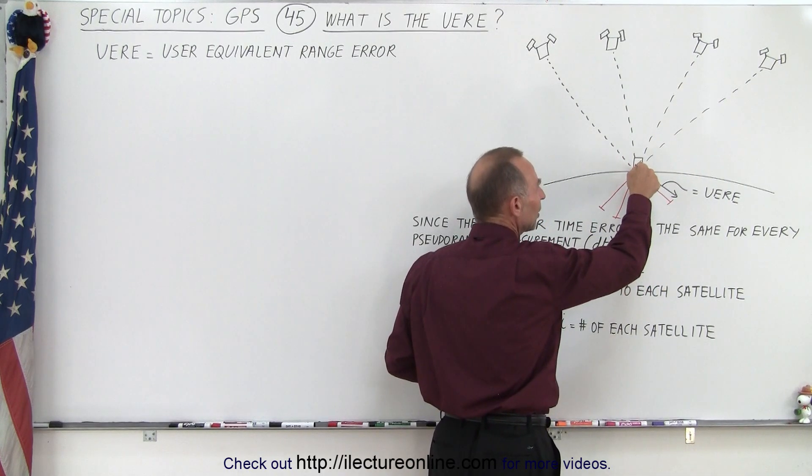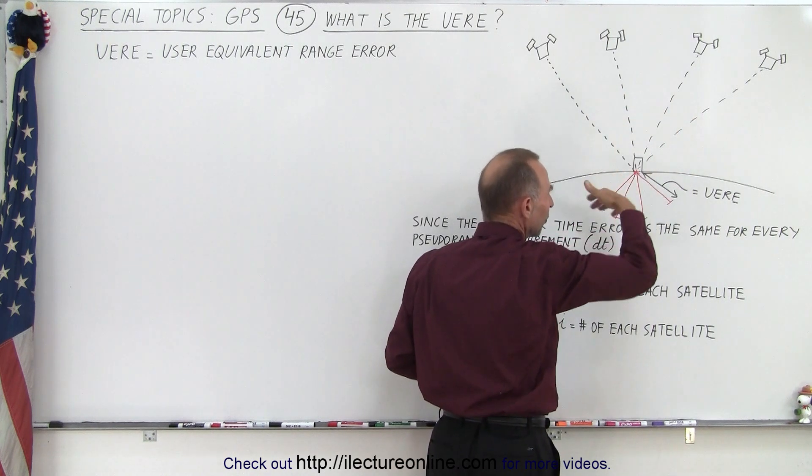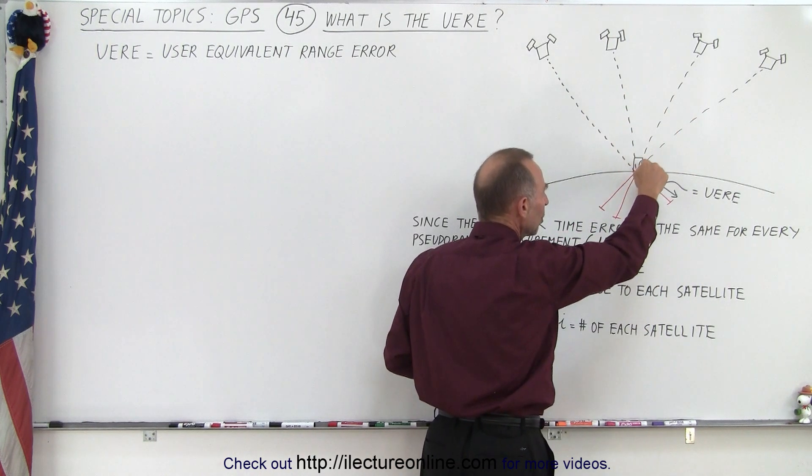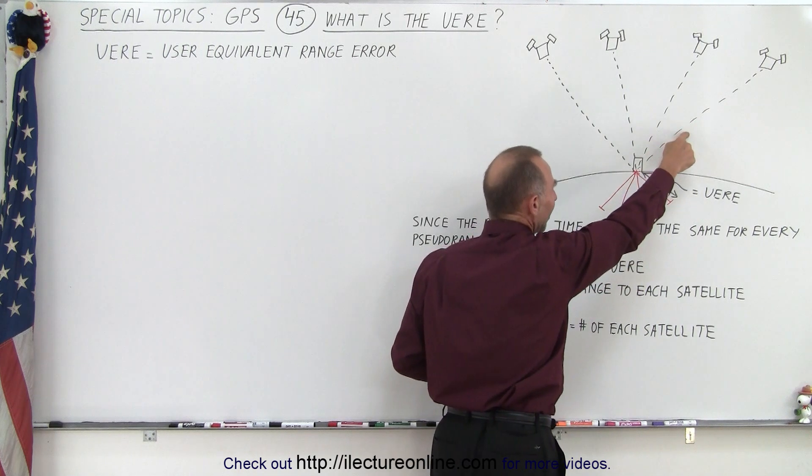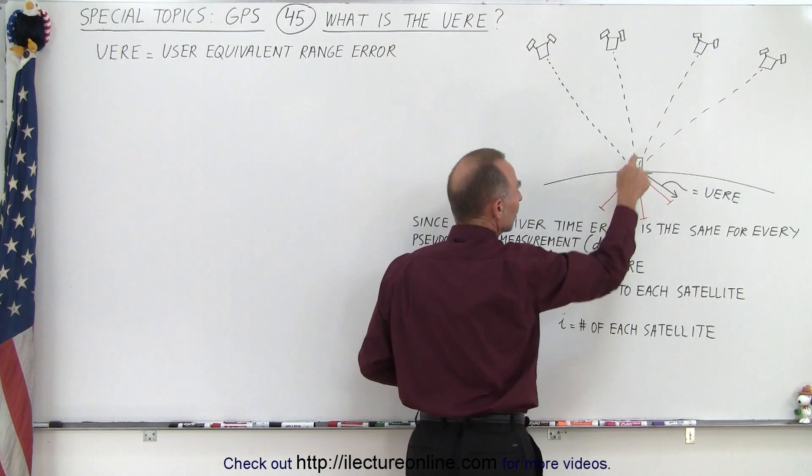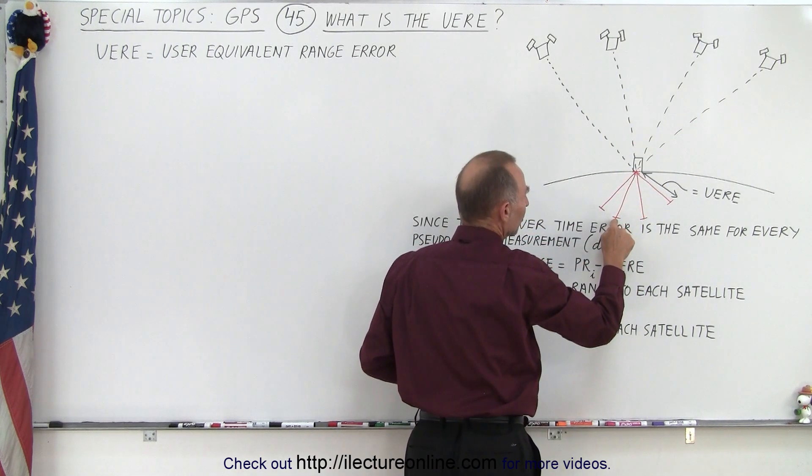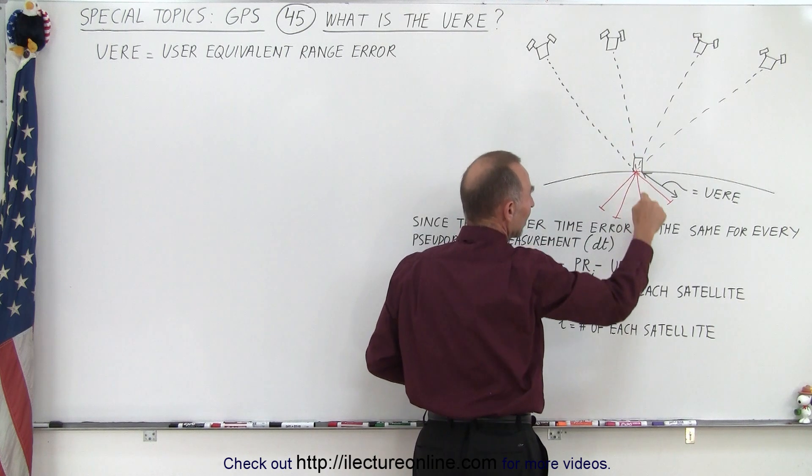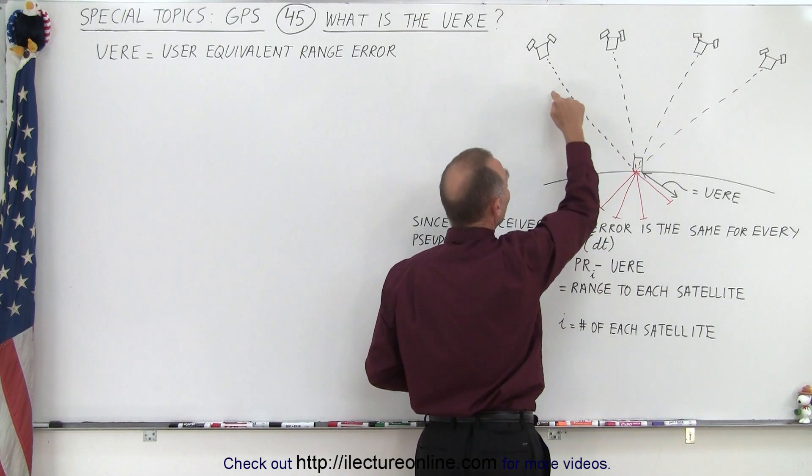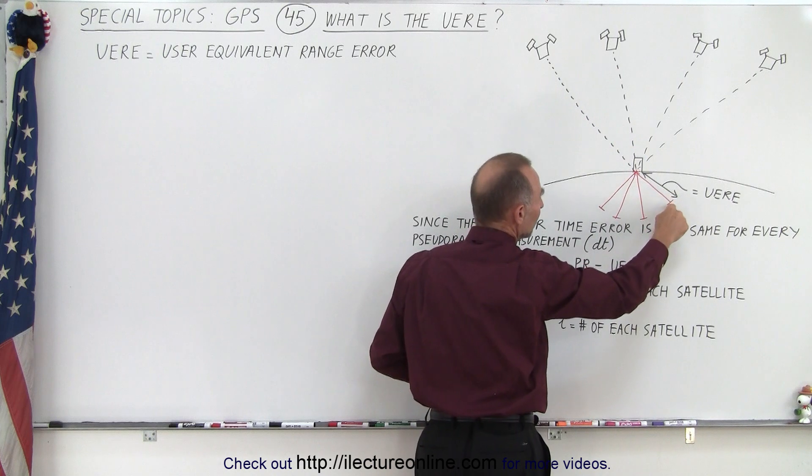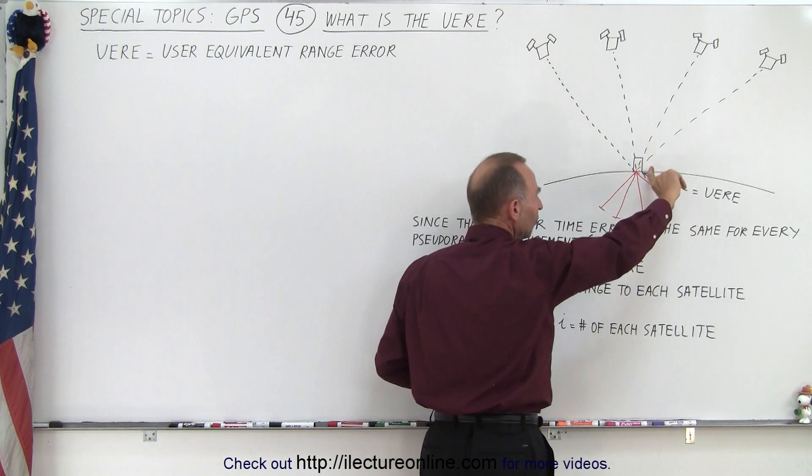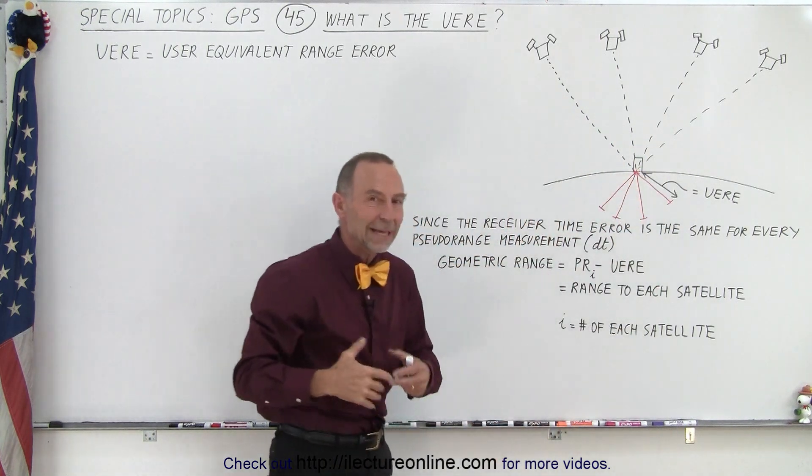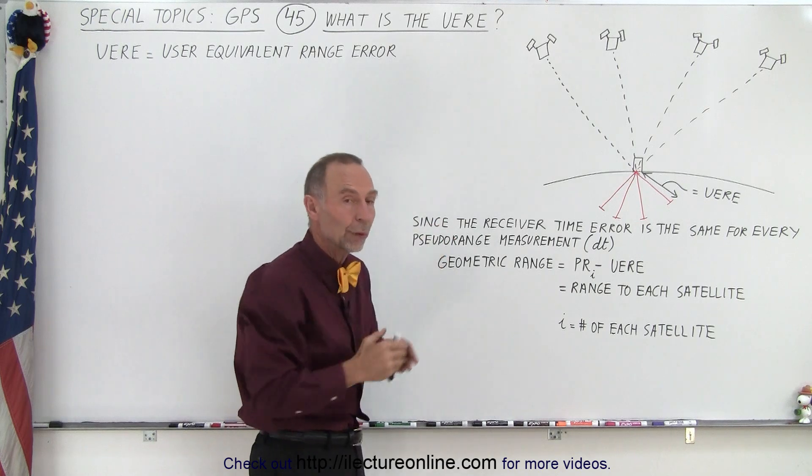Right, so if this is the position of the receiver, and we get all the biases from all these error measurements, we then can say that for this satellite the receiver appears to be over here, for this satellite the receiver appears to be over here, relative to this satellite the receiver appears to be here, relative to this satellite the receiver appears to be here, and that extra distance that seems to be added to the real true range.